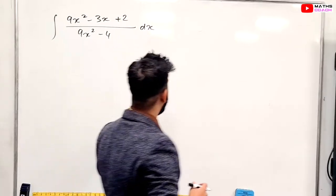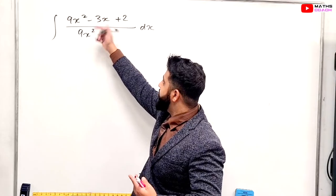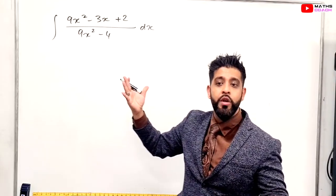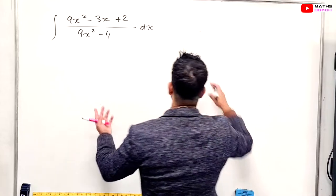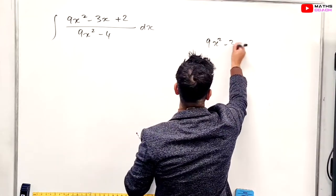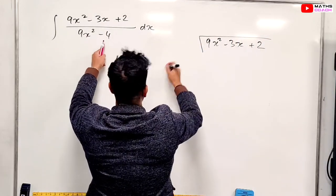Now this next one is an interesting one. So we know that we have a top heavy because it's the same power. So therefore we need to break this down using long division. So let's quickly do that. So we have 9x squared minus 3x plus 2 and we are going to divide that by 9x squared minus 4.